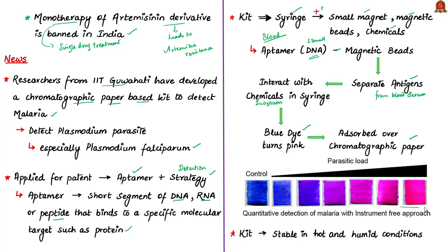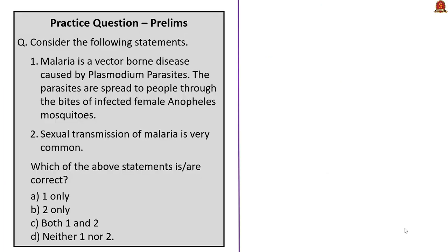The formation of pink color on the chromatographic paper indicates that malarial parasites are present in the blood serum. When the concentration of malarial parasite antigen is very high, the intensity of the color on the paper also increases. The researchers have said that this kit has high stability in hot and humid conditions. When mass-produced, this kit can be available much cheaper than the existing rapid detection test kits. Key terms to remember for exam preparation are aptamer and chromatographic paper.